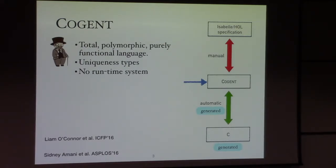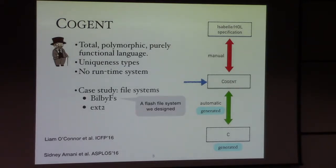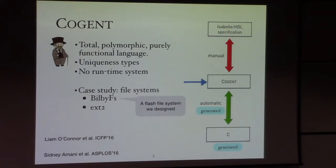The good thing is that in our framework, we don't have to trust an extra black box of runtime systems or garbage collectors. We case-studied applying this Cogent approach to file systems, which rely on minimum sharing, so that the uniqueness type system is more of an asset rather than an obstacle. We focus on BilbyFS, which is a flash file system that we designed from scratch.